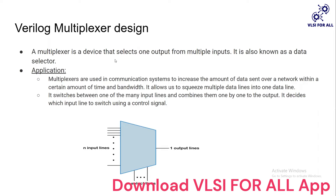A multiplexer is a device that selects one output from multiple inputs — it works like a data selector. Based on the select line, one of the inputs is connected to the output. Multiplexers are used in communication systems to increase the amount of data sent over a network within a certain amount of time and bandwidth. It allows squeezing multiple data lines into one data line, switching from many input lines and combining them one by one to the output.